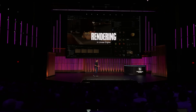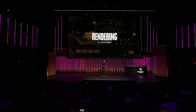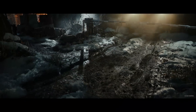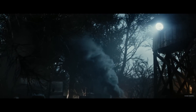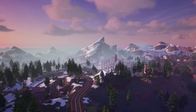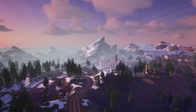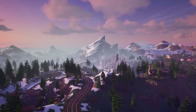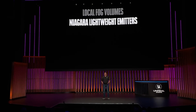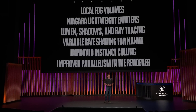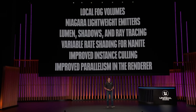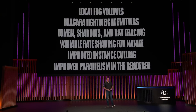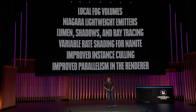On the rendering side, we just saw some of the beautiful scenes in the Skydance demo. They showed what can be achieved with Nanite tessellation. There were also nice volumetric effects using our heterogeneous volume feature. In 5.4, you'll also get other features like local fog volumes and Niagara Lightweight emitters. But most importantly, we've made a lot of performance improvements. We now have faster Lumen, shadows, and ray tracing. We've added variable rate shading for Nanite. We massively improved instance culling, and we significantly improved parallelism in the renderer. You name it, we made it faster.